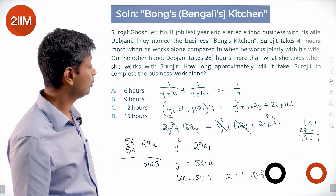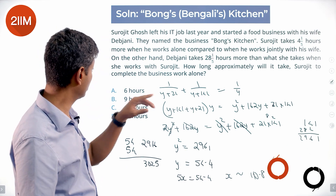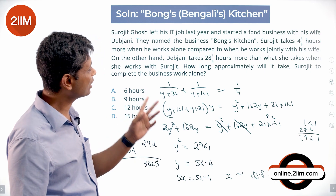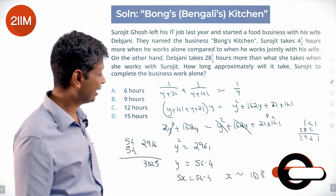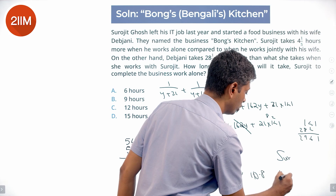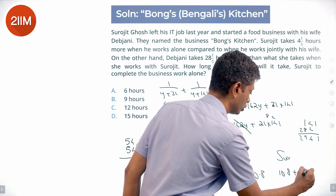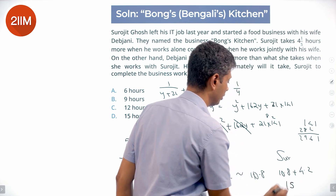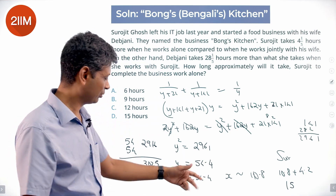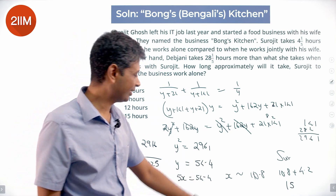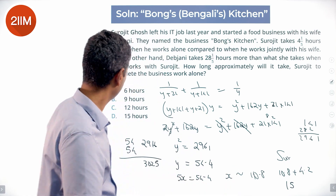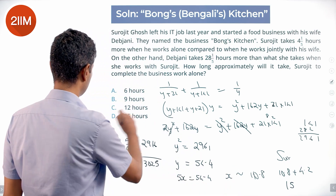How long approximately will it take Surajit to complete this? Surajit takes 4.2 hours more than x, and x is 10.8. So Surajit will take 10.8 + 4.2 = 15 hours. Because this isn't exactly 54.4, that's not exactly 10.8 — maybe 10.12 — somewhere there. But 15 hours is close enough. That's the answer.